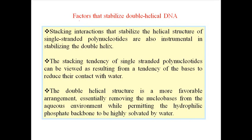The next topic is the factors that stabilize the double helical structure. The first factor is a stereochemical factor — the arrangement of the bases and their complementary pairing. It's not just the hydrogen bonds, but the arrangement of the bases and the position of the backbone and the nitrogenous bases that is key to stabilizing the DNA double helix structure.